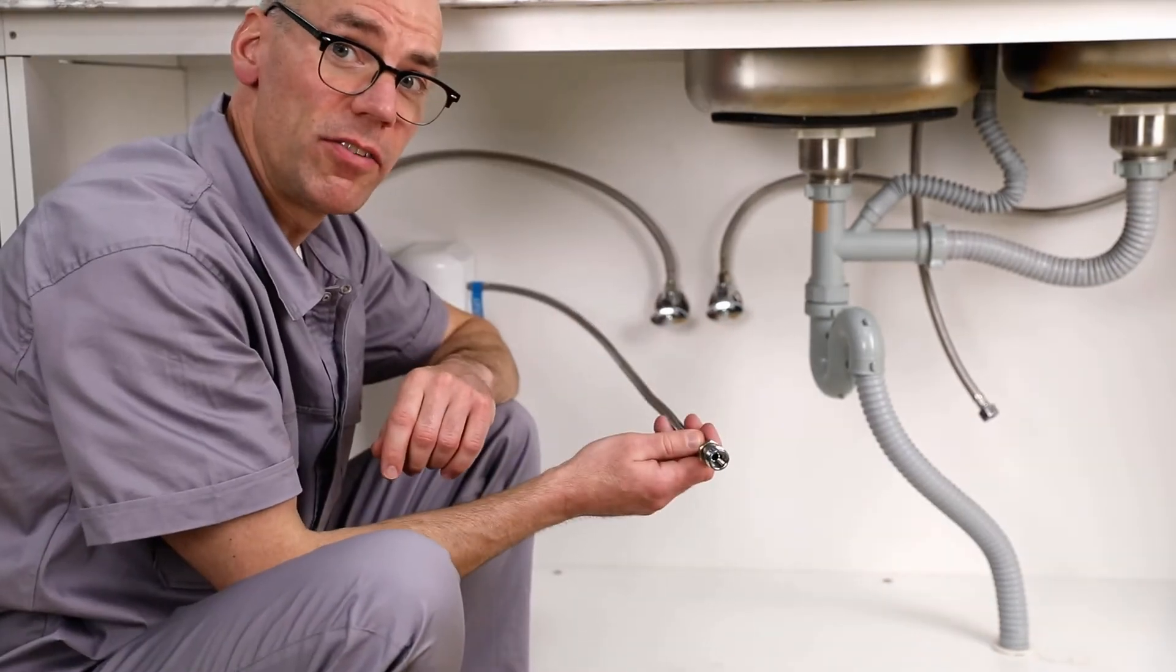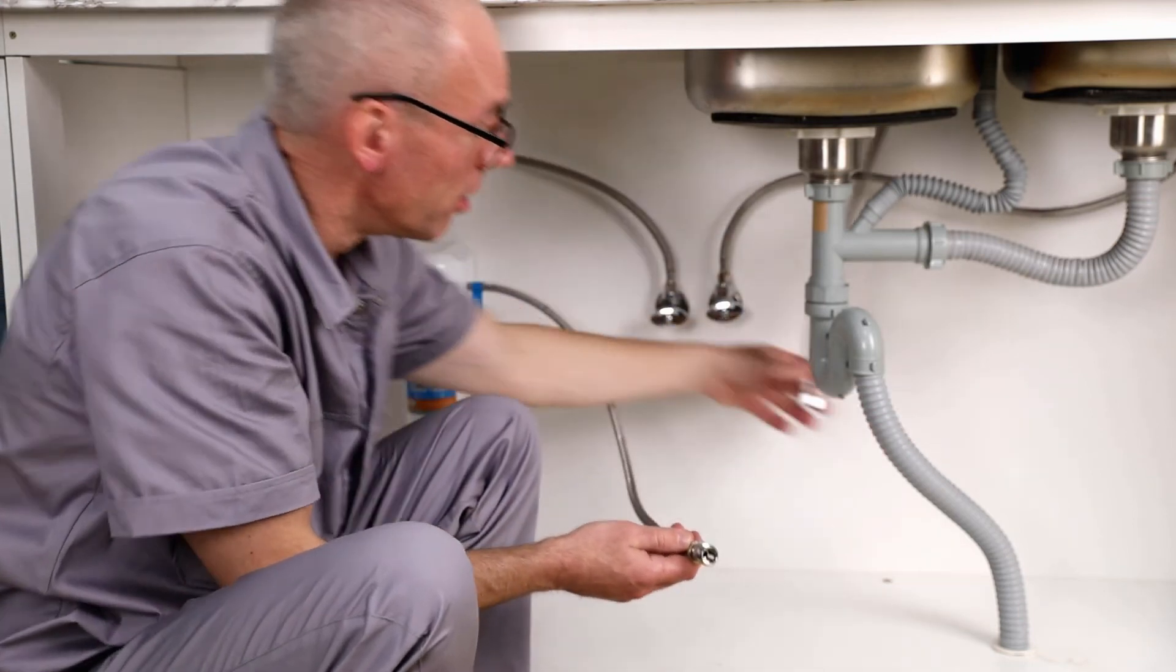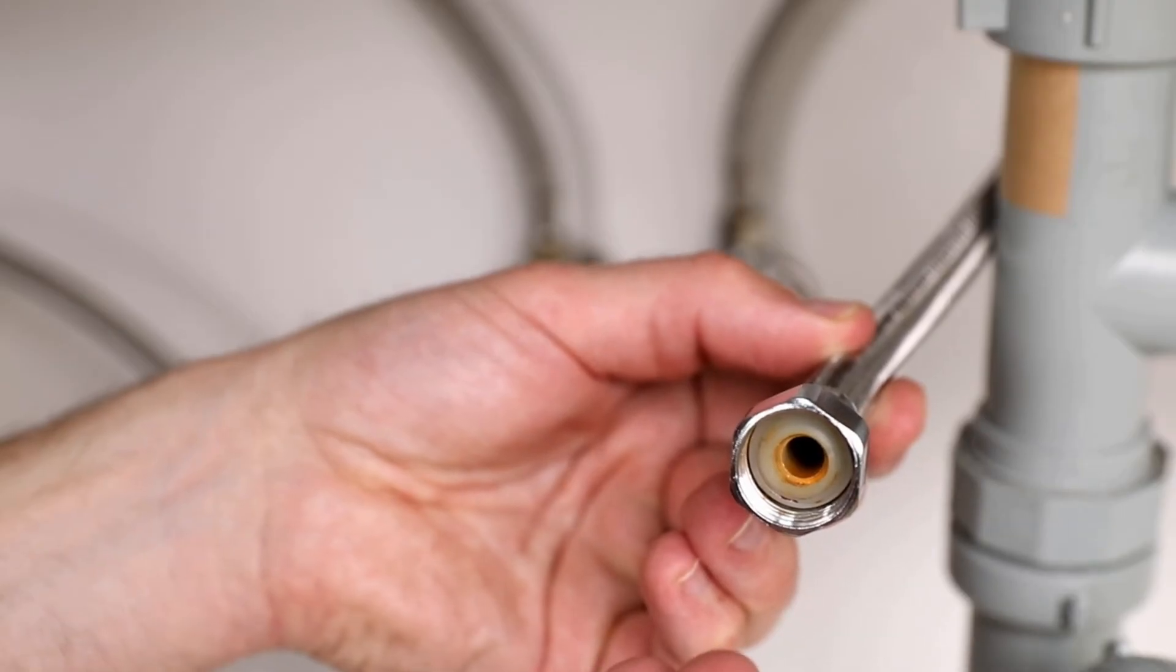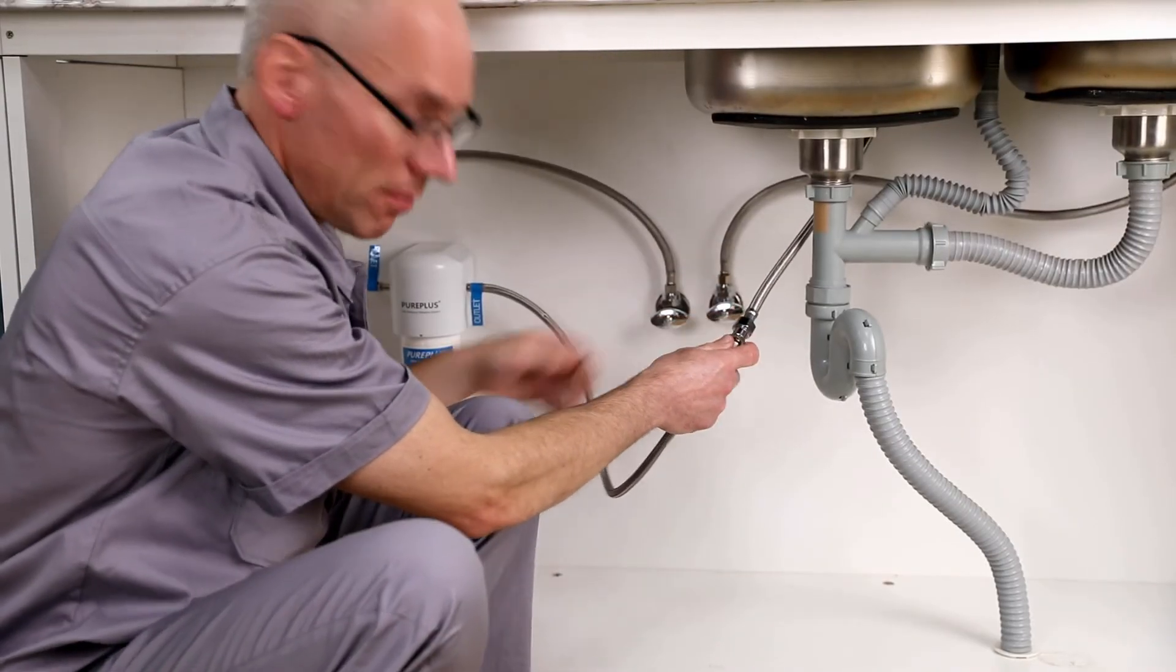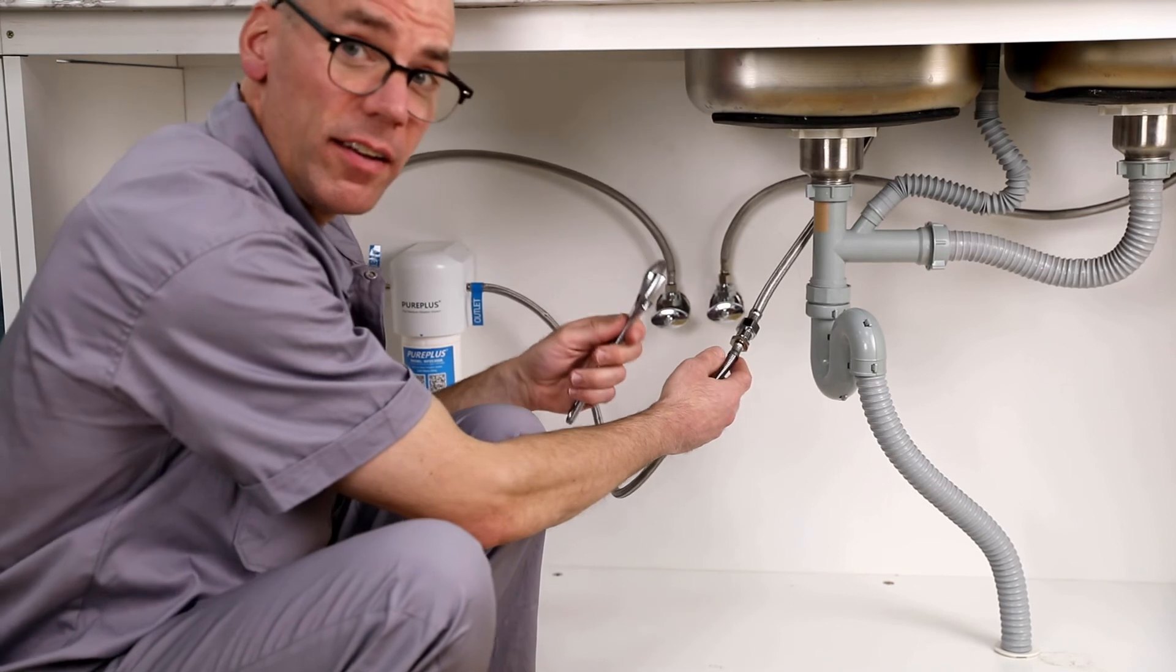Then attach the 1/2 inch FIP adapter to the faucet's inlet hose. Make sure that the O-ring is in position. And tighten it with the adjustable wrench.